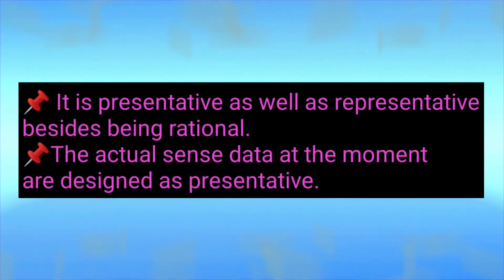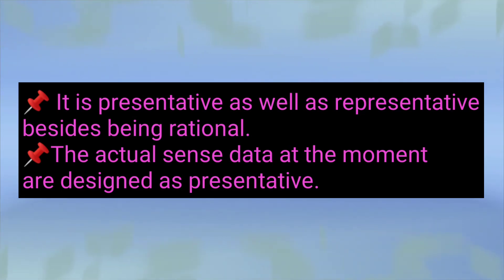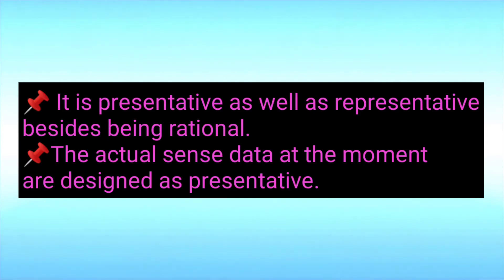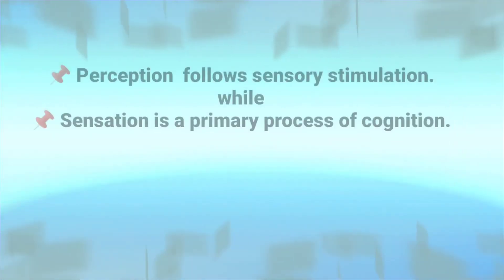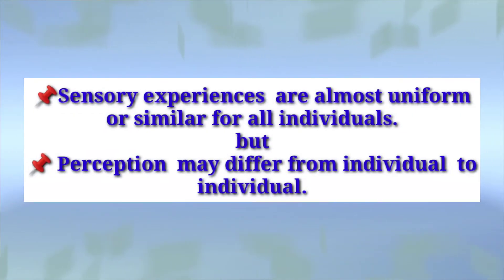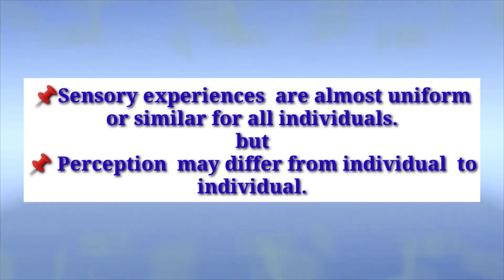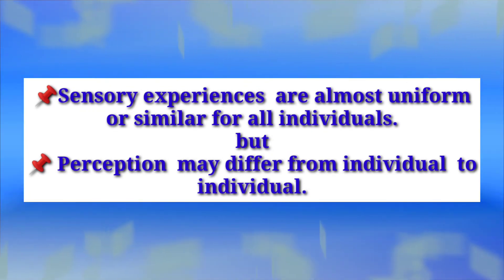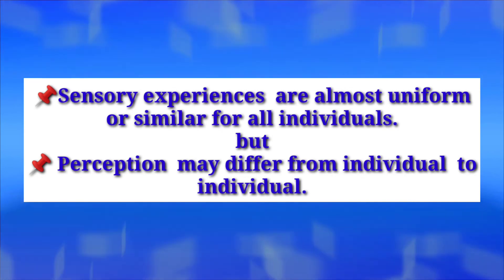Perception is presentative as well as representative, and it is also rational. The actual sense data at the moment are described as presentative, whereas sensation is only presentative. Perception follows sensory stimulation. While sensation is a primary process of cognition, sensory experiences are almost uniform or similar for all individuals, but perception may differ from individual to individual.